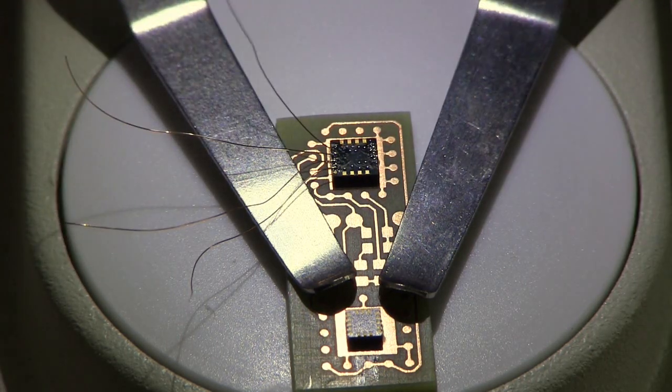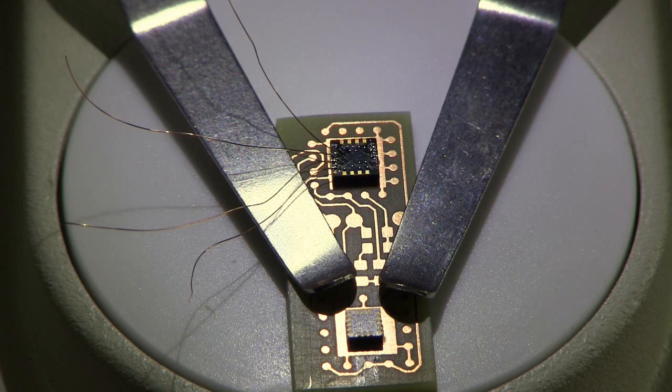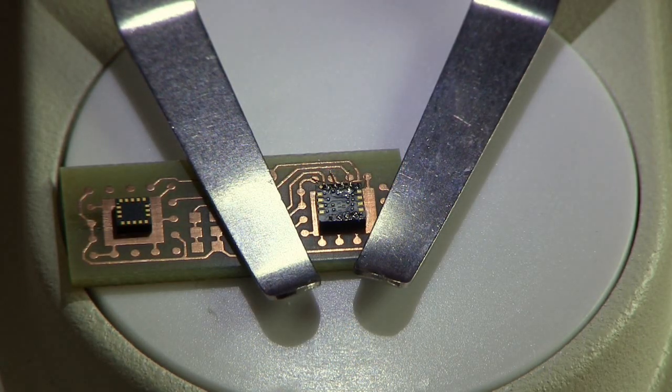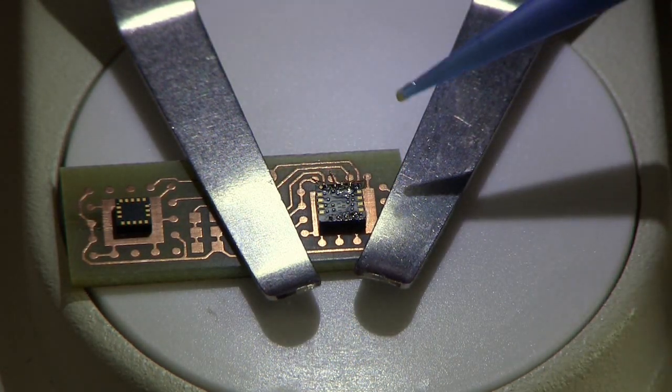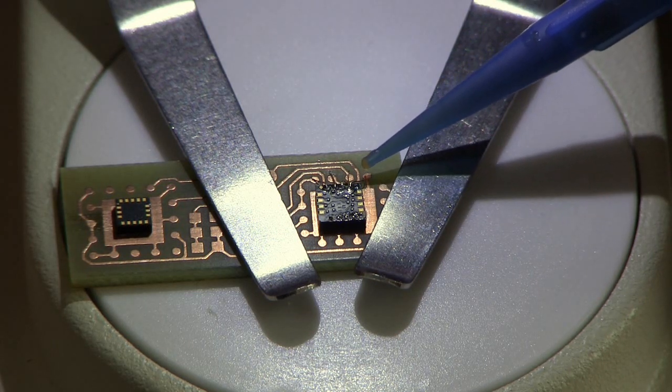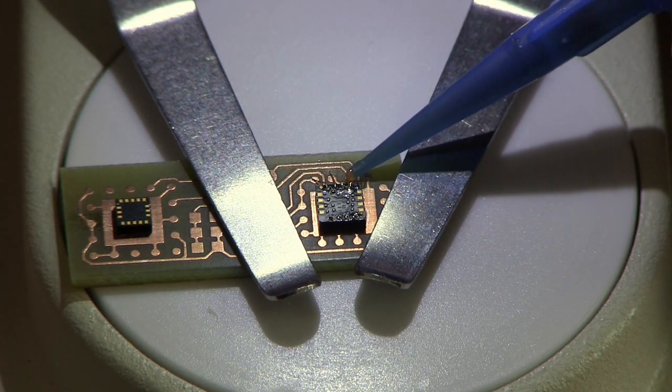After completing the soldering of the bond wires, it is time to cut them to the correct length. When everything is in place and there are no shorts, the wires are soldered to the pads on the circuit board.